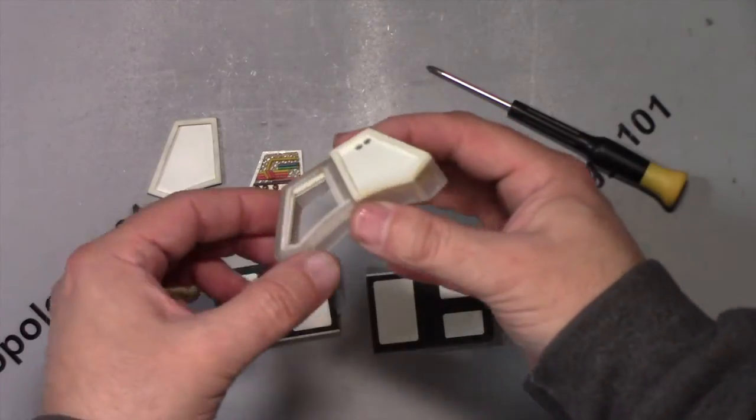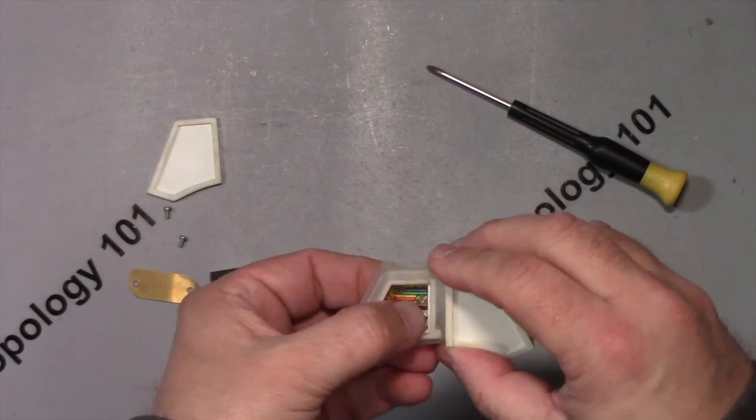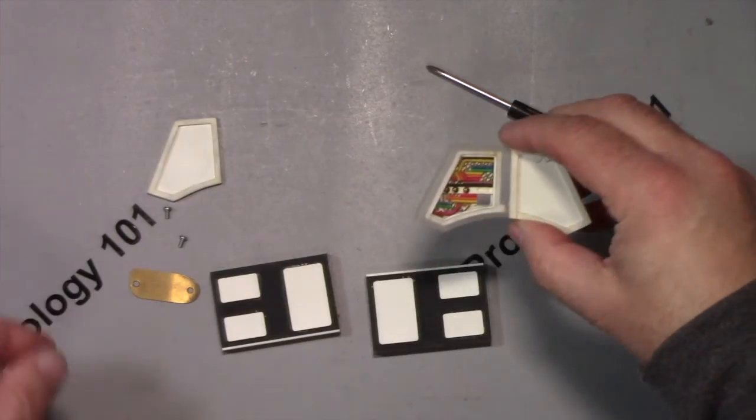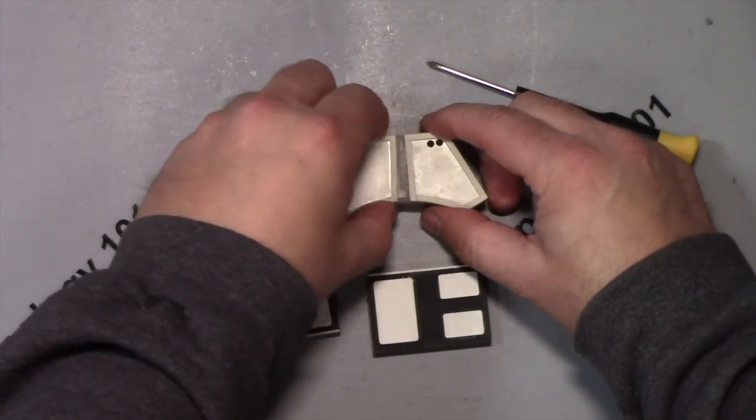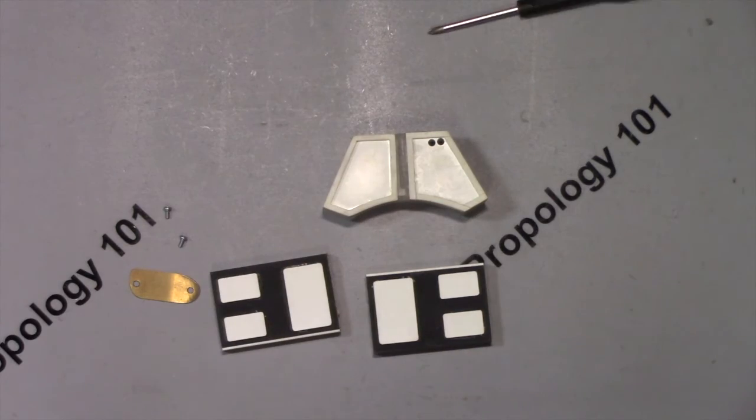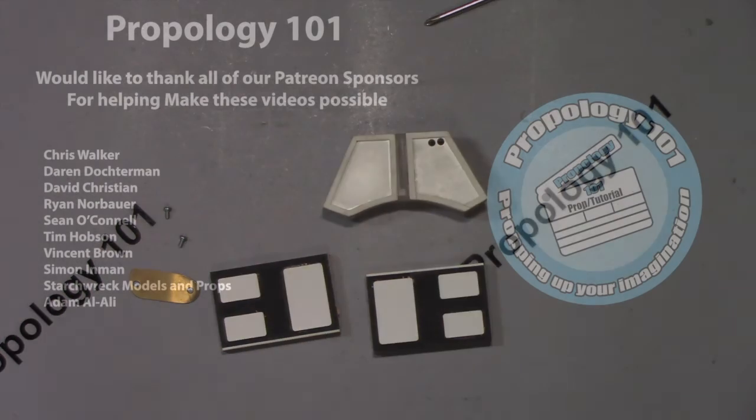Once again, this is the locking device that Quark and Sisko had around their necks after going through the Gamma Quadrant. I hope you've enjoyed this video. Please like and subscribe. And if you feel so inclined, please become a patron. Thank you.